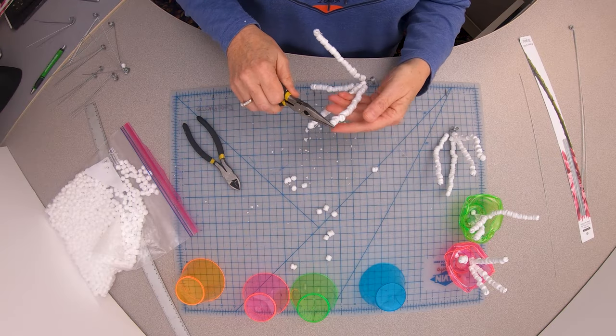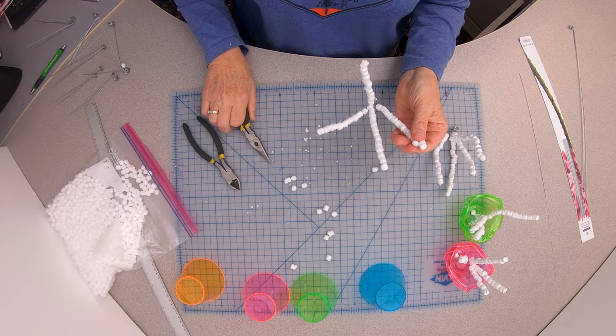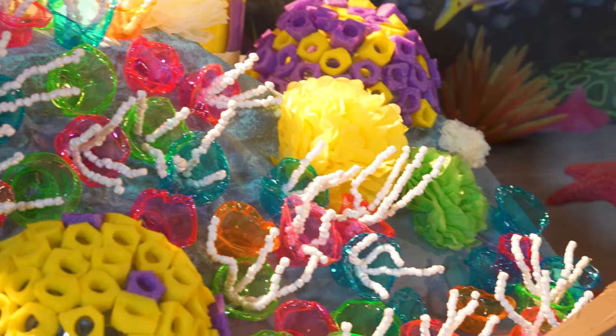You can use your pliers to twist the ends of the wire to keep the filling from falling off. There you go—a super dynamic addition to your Scuba VBS set.